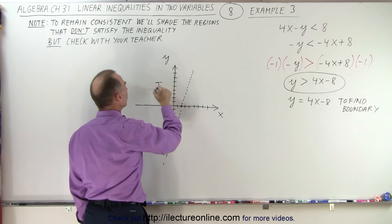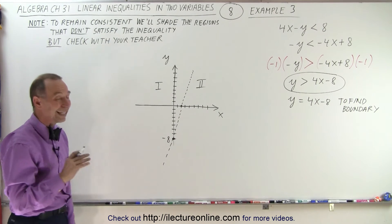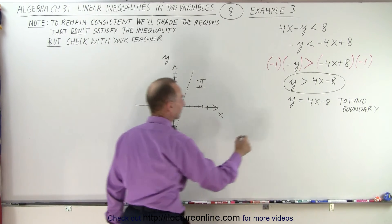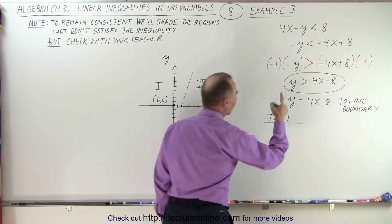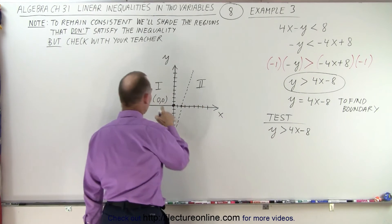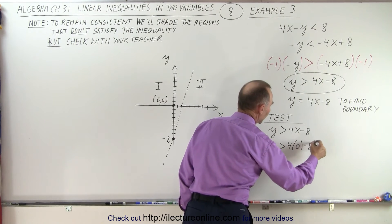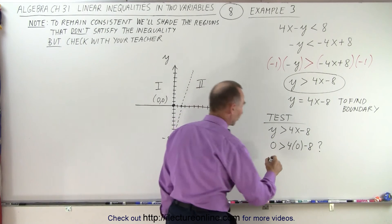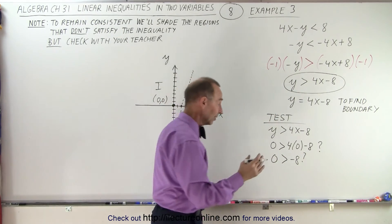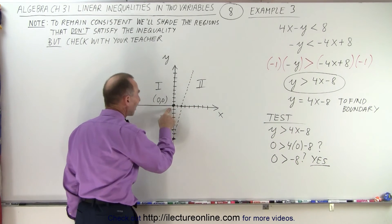This gives us two regions — region number 1 and region number 2. To test the regions, we pick an easy point in one of them. The easiest point is always (0, 0). So let's take our inequality, y greater than 4x minus 8, and plug in (0, 0) for x and y: 0 greater than 4 times 0 minus 8, question mark. So is 0 greater than negative 8? And of course, 0 is greater than negative 8 — 0 is always bigger than negative numbers, so the answer is yes.